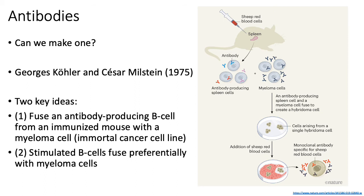The second key idea was that when you do this fusion between a collection of myeloma cells and a collection of stimulated B-cells isolated from the spleen that are producing antibodies against your antigen, those stimulated B-cells fuse preferentially with the myeloma cells. And so you're able to select out cells that were not stimulated by your antigen. This was basically the first study to develop a procedure to generate high quality monoclonal antibodies.